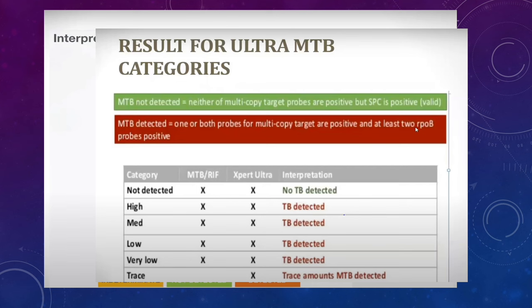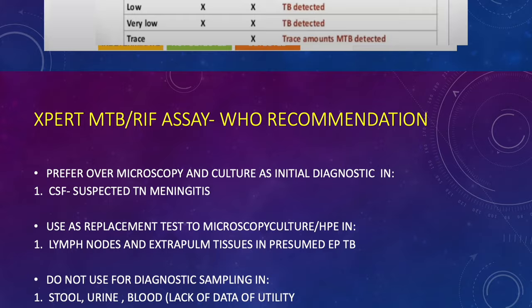Xpert Ultra gives results as 'trace,' 'very low,' 'low,' or 'medium.' If fewer than two probes come out positive, MTB is 'trace.' If more than two RPOB probes are positive, it is significant. In that sense it is better than MTB/RIF. However, many studies have concluded there may not be a significant clinical difference, although Ultra can detect very trace amounts of MTB.